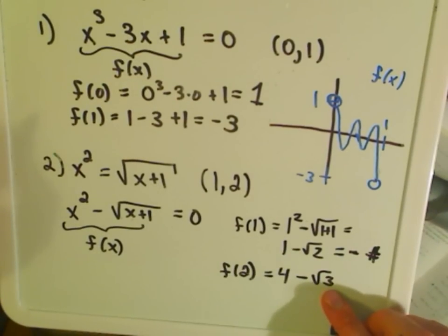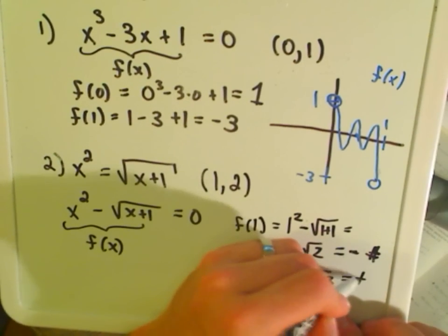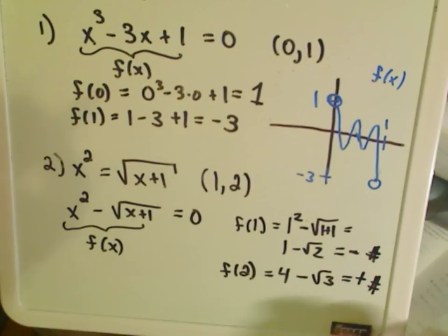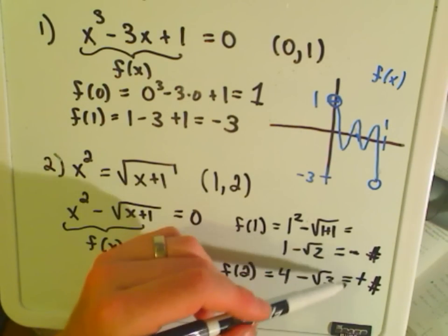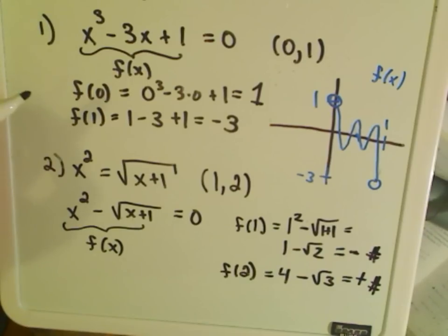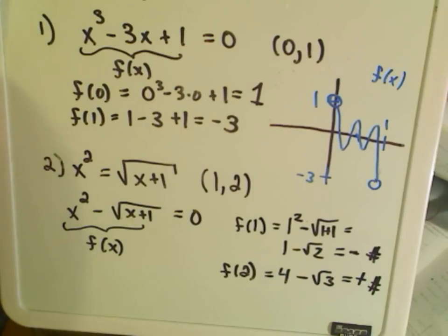Okay, if you plug two into this function, notice if you plug two in, you'll get two squared, which is four, minus the square root of three. Well, square root of three is certainly smaller than four, so this is going to equal some positive number. By the same argument that we gave in the last problem, it says, okay, at one it's negative, at two it's positive. The graph to go from negative to positive is going to have to cross the x-axis, and therefore, again, there has to be another root.